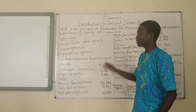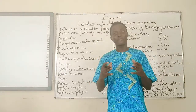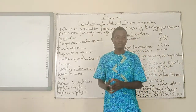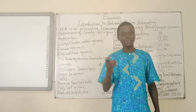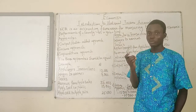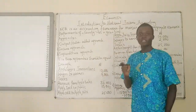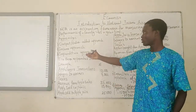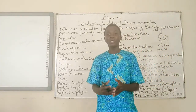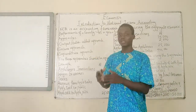Number two is the income approach. The income approach is looking at the income of everyone that produces the final goods and services in an economy at a given period of time — the currently produced final goods and services. Number three, we're talking about the expenditure approach, which is also the spending approach. It is looking at how we calculate the national income from the spendings of everyone on the output that have been produced in that economy.